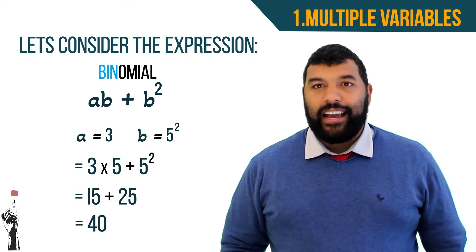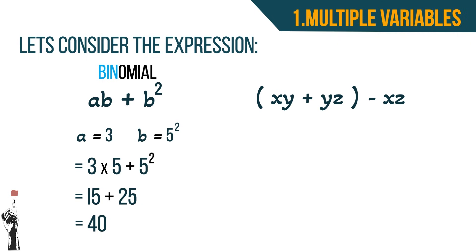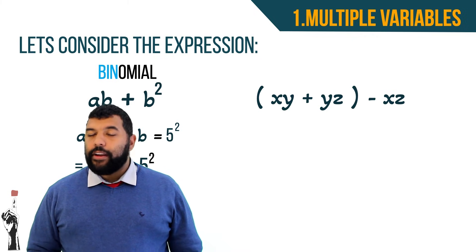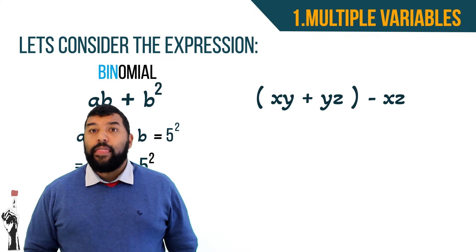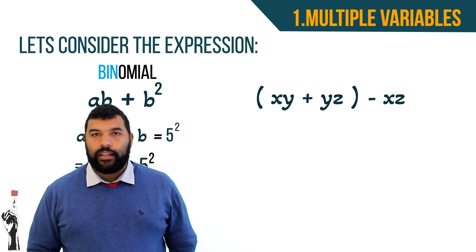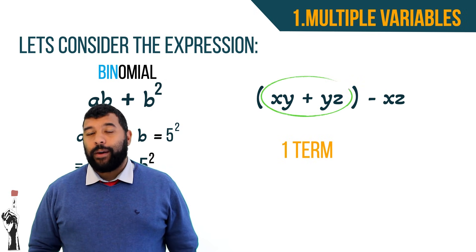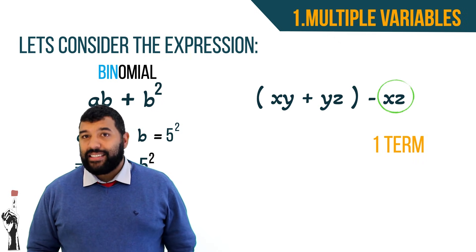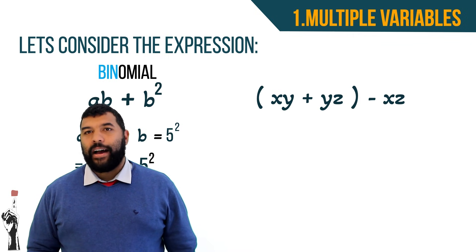Let's consider a more complicated example: (xy plus yz) in brackets minus xz. We remember that brackets gather terms together, so we have one term inside the brackets and another term in minus xz — thus two terms, making it a binomial.